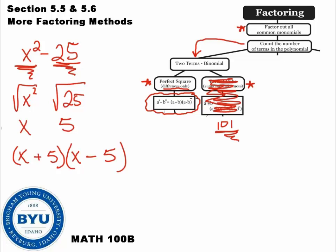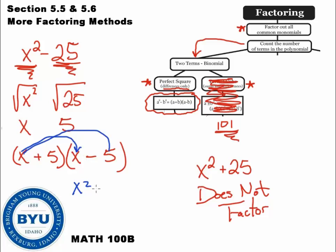Now this only works if it's subtraction. If they give you an addition one, if they gave you x squared plus 25, this does not factor. It only factors if you have subtraction. We can always check this, by the way, by simply using the super distribution. x times x is x squared. x times 5 is negative 5x. 5 times x is 5x. And 5 times negative 5 is negative 25. So we get x squared. These middle terms cancel out. Negative 5x plus 5x. That's gone. Just leaving us with minus 25. So it does check out and it's all good.